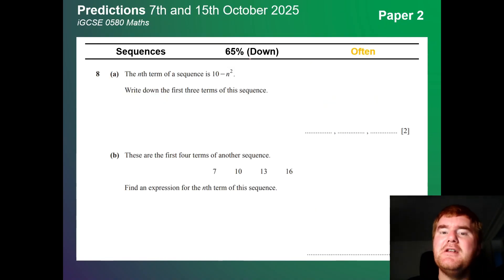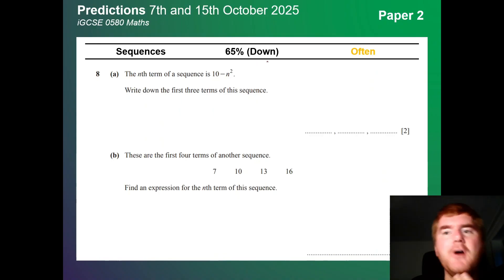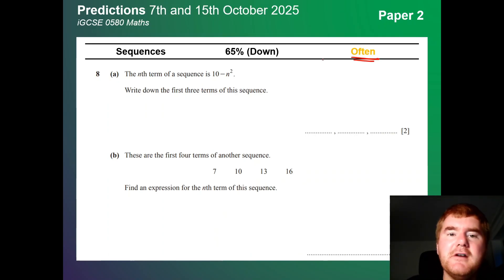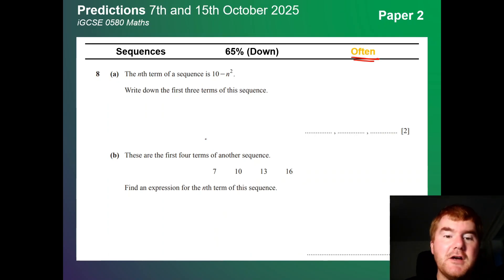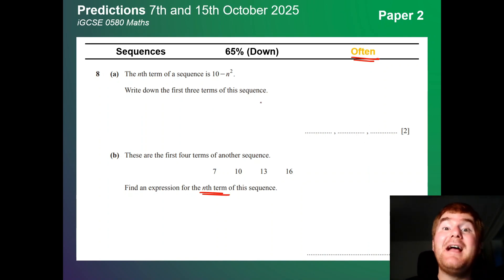Sequences is slightly down at 65%. It's generally been a pretty common topic, but on Paper 2 it's slightly down, so it's now in the 'often' category. They can give you a variety of different questions. A very typical part B is where you're looking for the expression for an nth term or writing out a sequence.